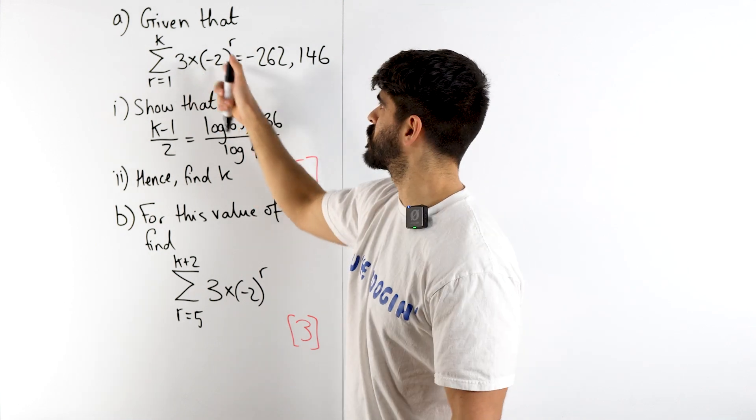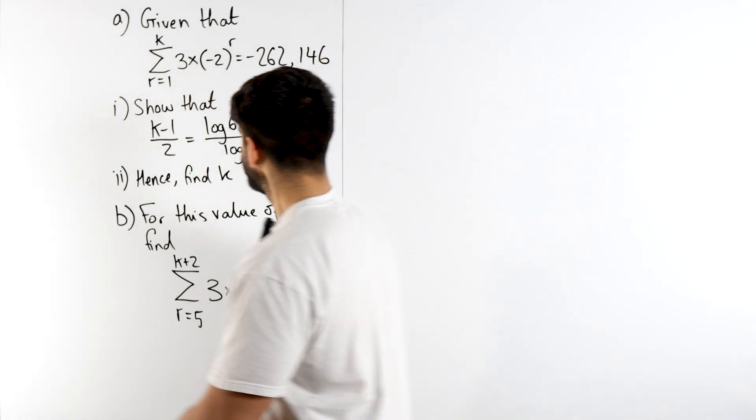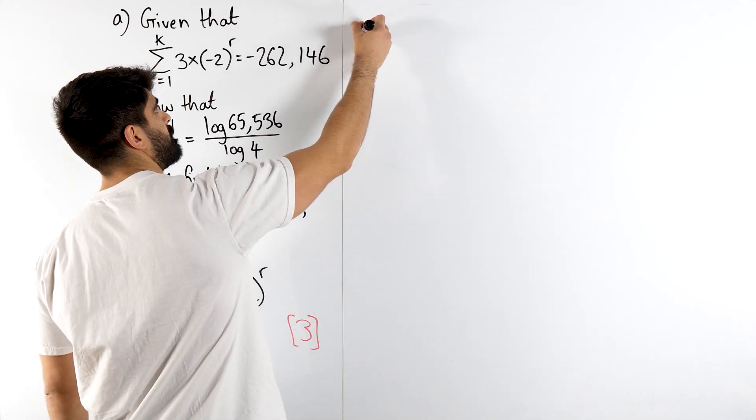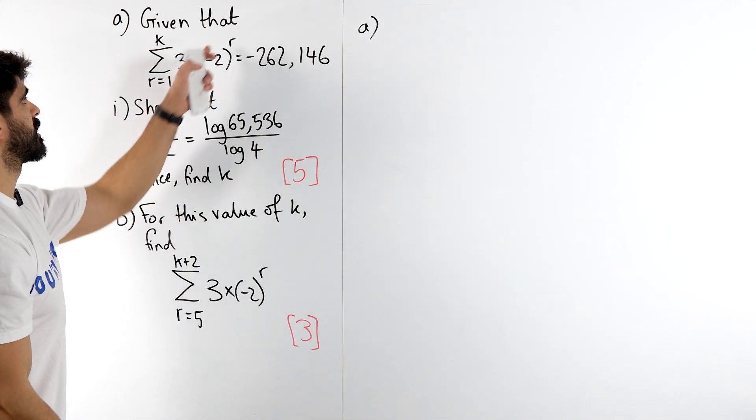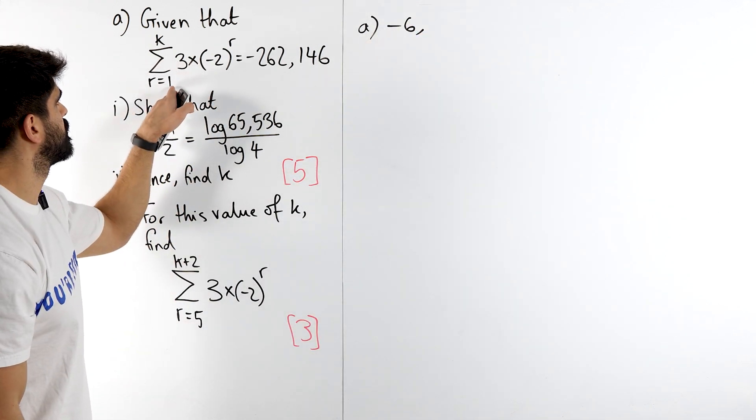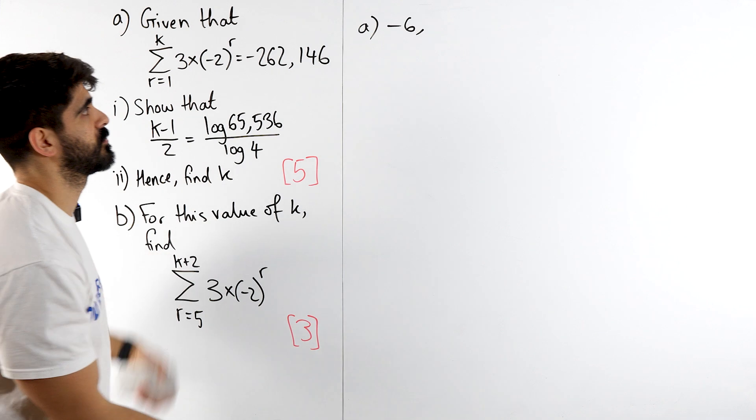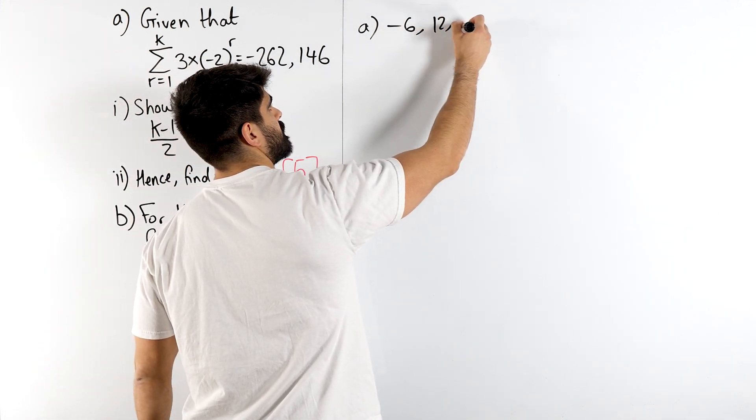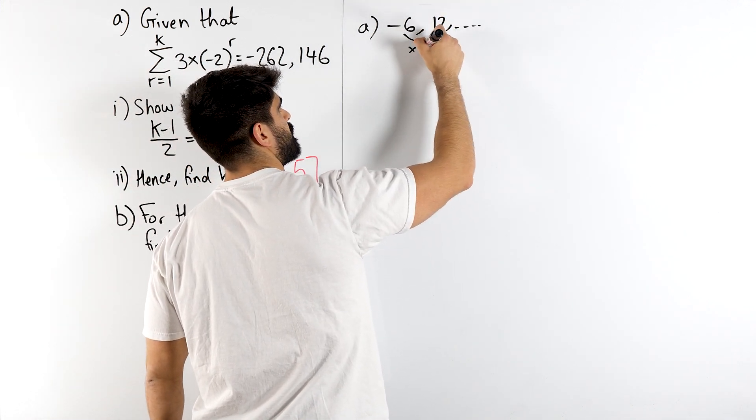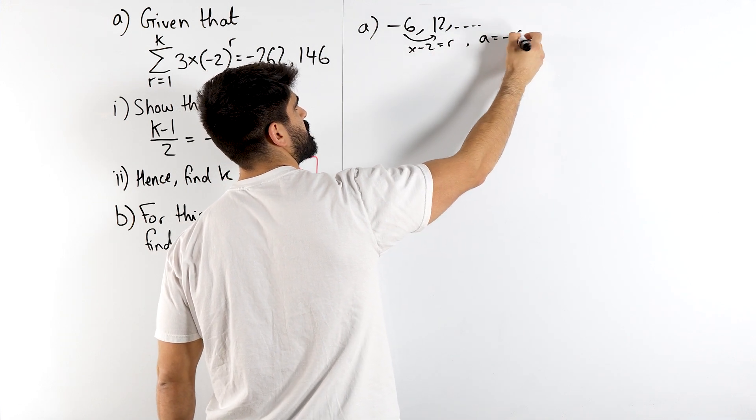And to go from term to term you're just multiplying by minus 2. Your first term when subbing in 1 would be 3 times minus 2 which is minus 6. The second term, subbing in r is 2, minus 2 squared is 4 times 3, 12 etc. You can see you're multiplying by minus 2. That's your common ratio. And your first term is minus 6.